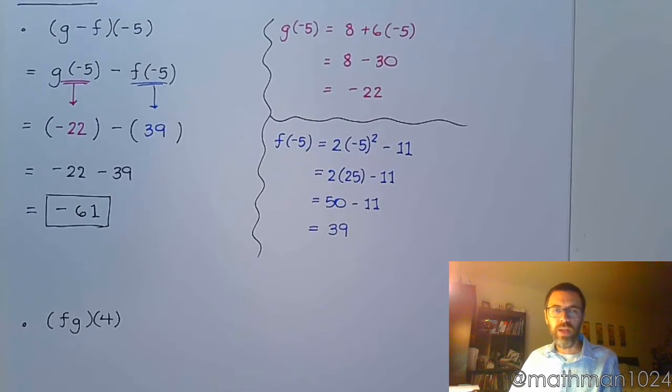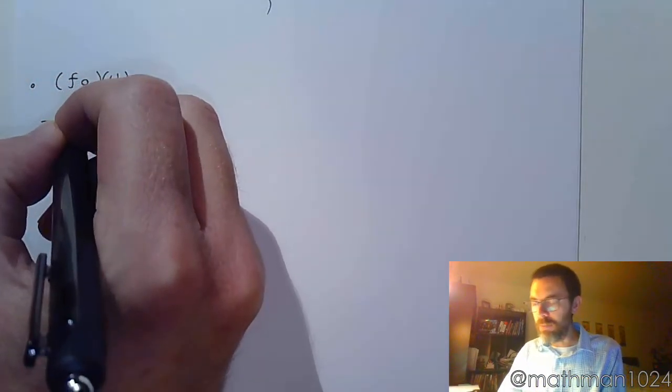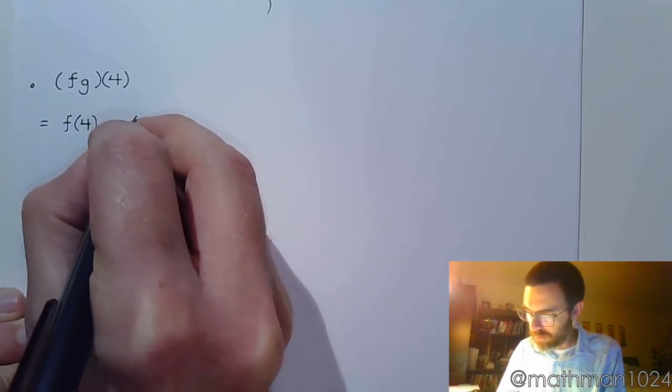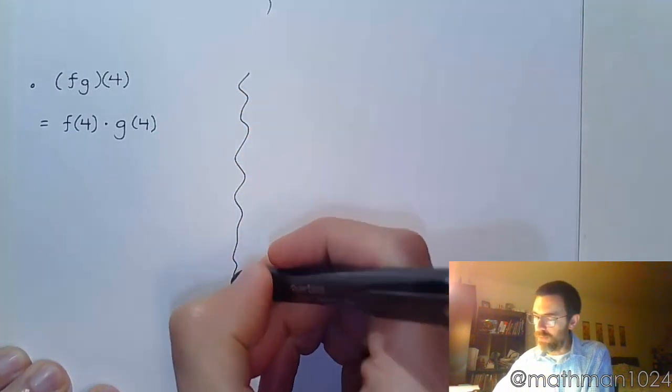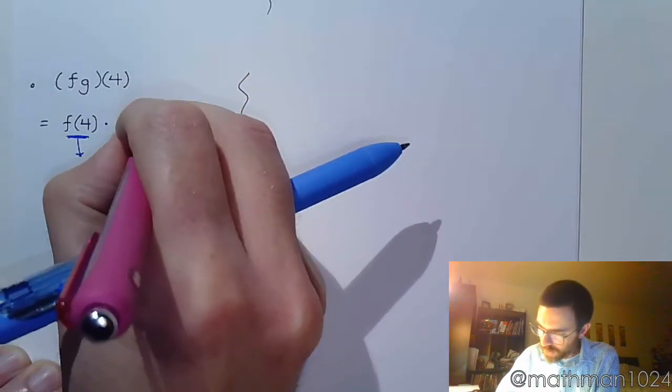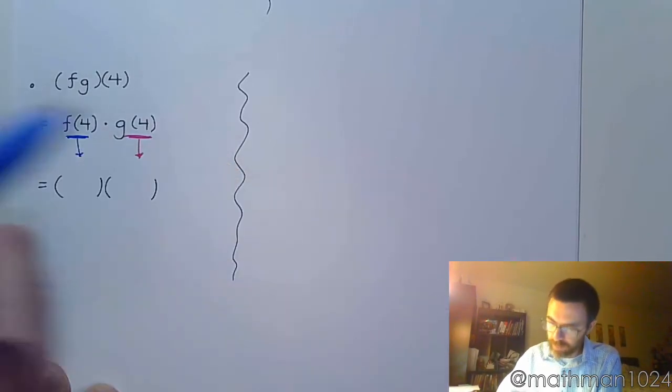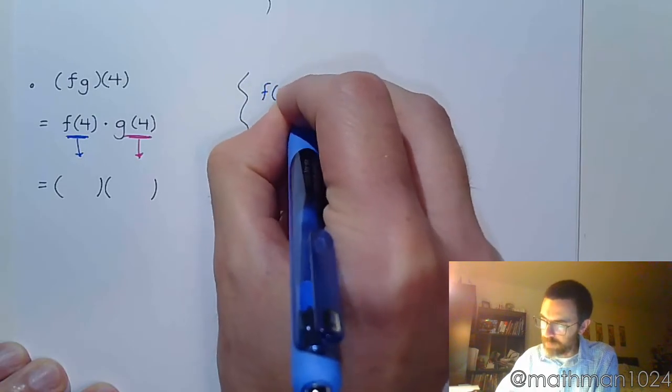All right. Let's do one more guy right here. fg of 4. So this means, when these guys are right next to each other, that means multiplication. So that means f of 4 times g of 4. Don't actually multiply these functions together. Don't take the x, you know, the variable expressions and multiply them together. That's a bad idea. Instead, do what we had above. Go off to the side and figure out each of these. Figure out what happens to this guy and figure out what happens to that guy. And once we have those values, then we multiply them.